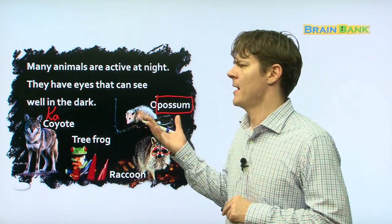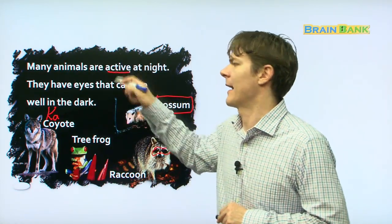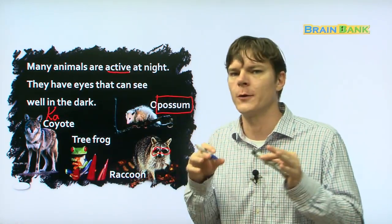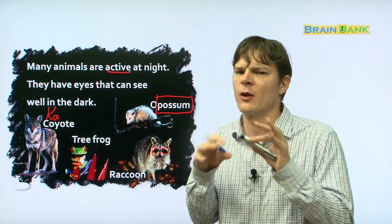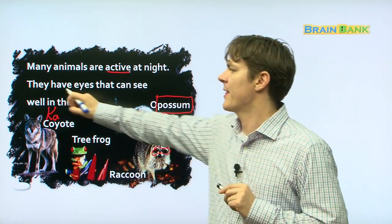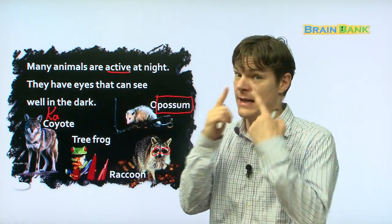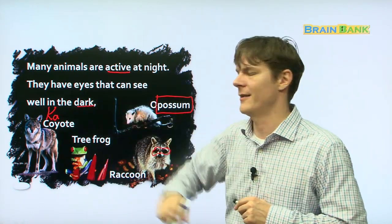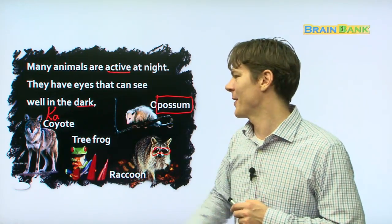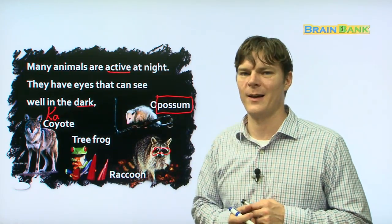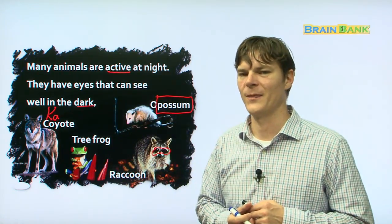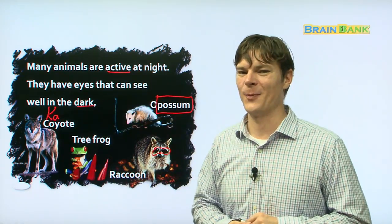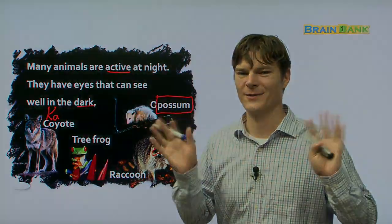So, many animals are active at night. That means they do a lot of things at night. Like they go running around looking for food and chasing other smaller animals or insects. They have eyes that can see well in the dark. So now you've learned about all of these different kinds of animals that can see well in the dark. So thank you for listening to Eyes in the Dark with Elias. And I hope to see you soon. Bye-bye.